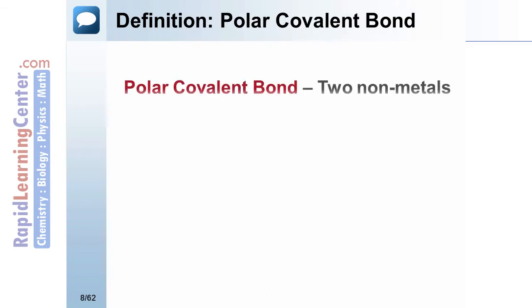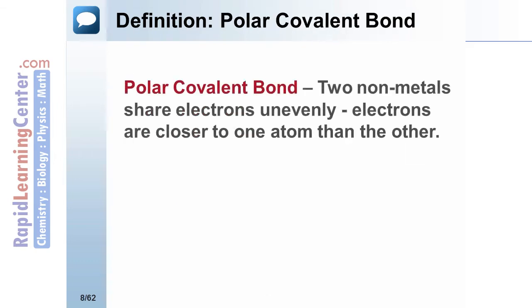Polar covalent bonds are between non-metals and are the result of sharing electrons as well. However, the electrons are pulled more by one nucleus than the other and are therefore shared unevenly.